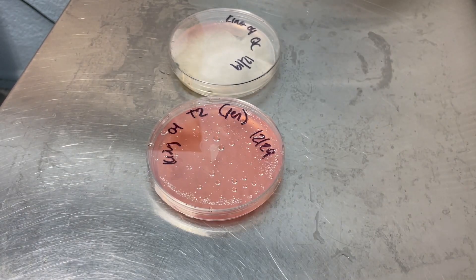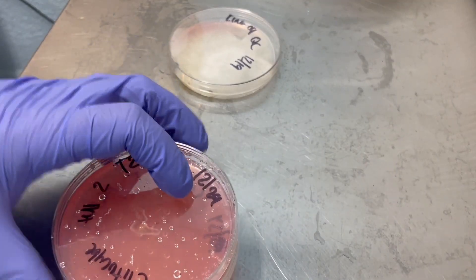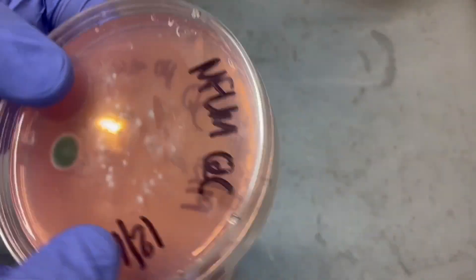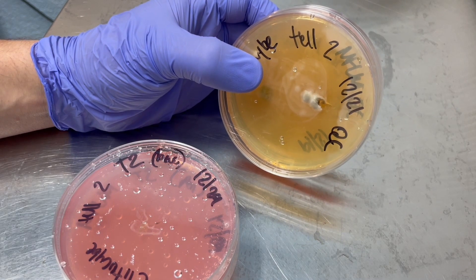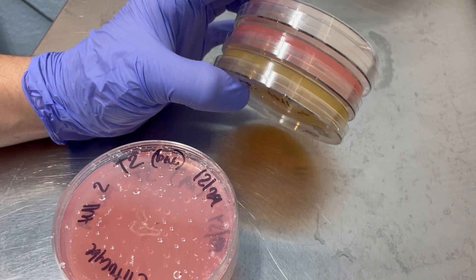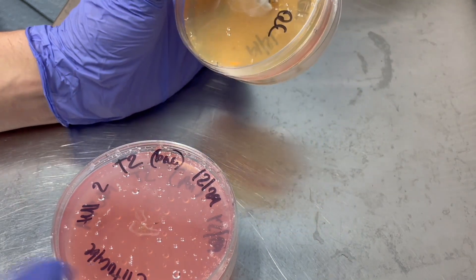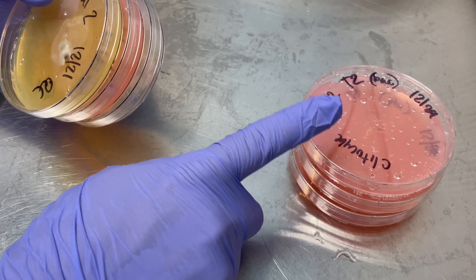And then I can go ahead and discard these old plates. Some people will autoclave them and then throw them out, but I'll just usually wrap them in some saran wrap or something and get rid of them. And now I have backup cultures that can go into the incubator.